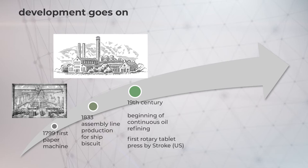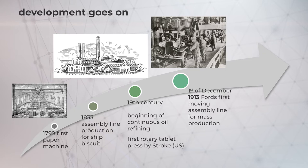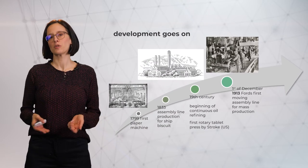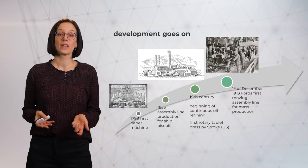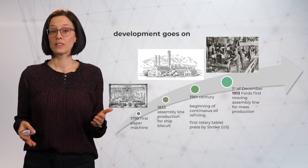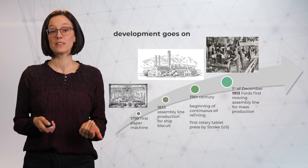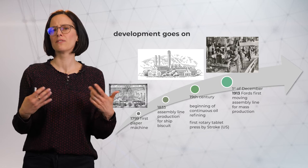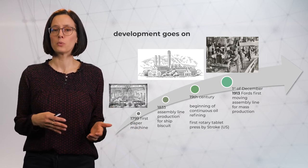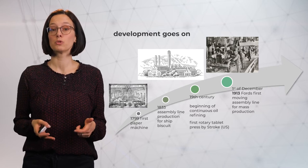Another interesting fact is that the first rotary tablet press was developed in the 19th century, so in theory, continuous manufacturing could have been implemented in the pharmaceutical field a lot earlier than it actually was. We know how Ford's assembly line production changed the way we look at cars — they were no longer a luxury product, but became part of everyday lives at an affordable price. We want these same benefits for the drugs and medicines we produce: available to everybody, at a lower price, with reduced production costs, and at the same time, safe.